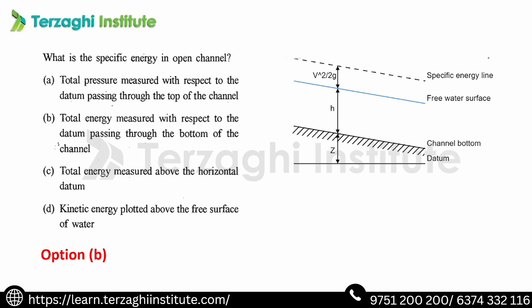Specific energy in open channel flow: generally, total energy equals kinetic head (V²/2g) plus pressure head (h) plus datum head (z). In open channel flow, the datum is taken at the bottom of the channel. So specific energy is the total energy measured with respect to the datum passing through the bottom of the channel.